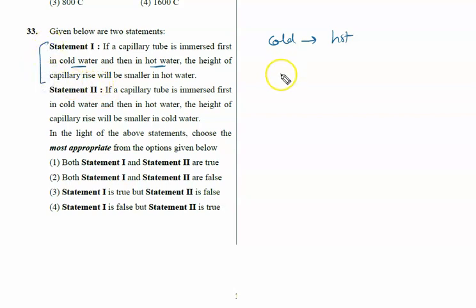All of you know the ascent formula: H is given by 2T cos theta upon R rho g. If all of you know, hot soup is tastier compared to cold soup because when the soup is hot its surface tension will decrease and it will spread more.